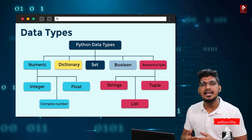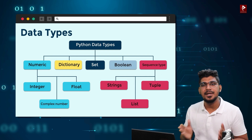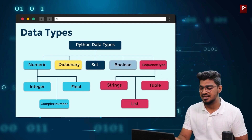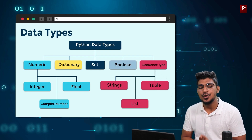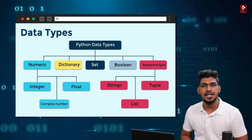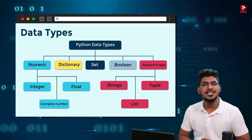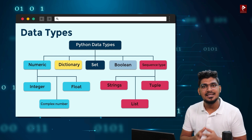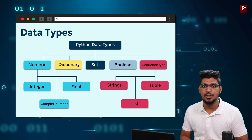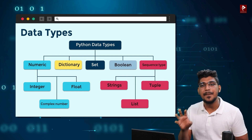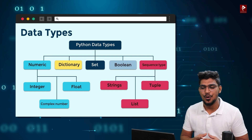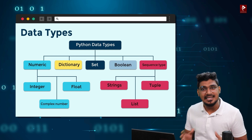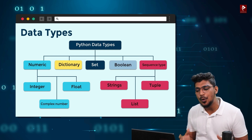In this video, there are classifications. In Numeric: Integer, Complex, and Float. These are Python numbers.